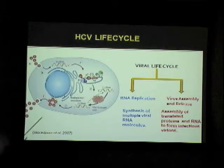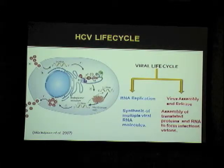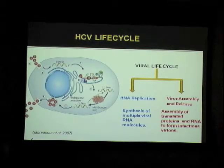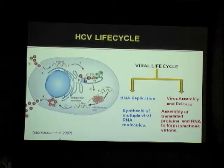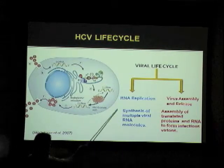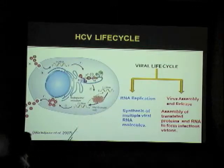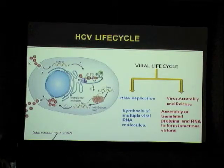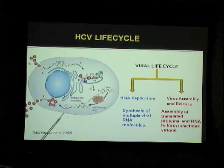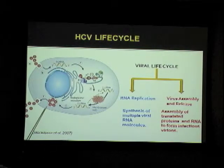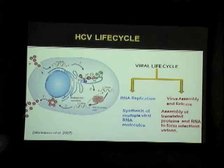While the non-structural proteins help in every part of the viral life cycle — right from replication to infection to mounting a host immune defense — the structural proteins on the other hand form the viral capsule as well as the envelope. Once the proteins have been translated, the RNA then goes in for RNA replication, along with the help of the non-structural proteins. An important aspect of the viral life cycle is RNA replication, that is synthesis of multiple RNA molecules. The next step is viral assembly and release, which involves assembly of the translated proteins as well as the RNA to form infectious virions, which once formed leave the cell and go on to infect adjacent host cells.